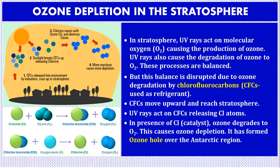In the stratosphere, UV rays act on molecular oxygen causing the production of ozone. UV rays are also responsible for the degradation of ozone to oxygen. These are natural balancing processes, but this balance is disrupted by ozone degradation by chlorofluorocarbons (CFCs). CFCs move upward and reach the stratosphere, where UV rays act on CFCs releasing chlorine atoms. Chlorine acts as a catalyst causing ozone to degrade to oxygen, forming ozone holes over the Antarctic region.